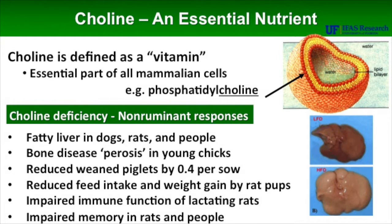Choline is found in various forms in the body. Probably it's found most commonly in a compound called phosphatidylcholine. Phosphatidylcholine helps form a bilayer of lipids surrounding each mammalian cell that serves as a gatekeeper for letting other nutrients into the cell and cell crosstalk. It makes up around 50% of all the lipids in a cell membrane.